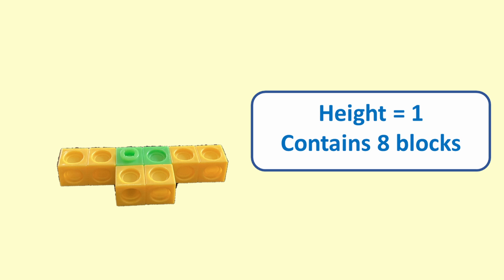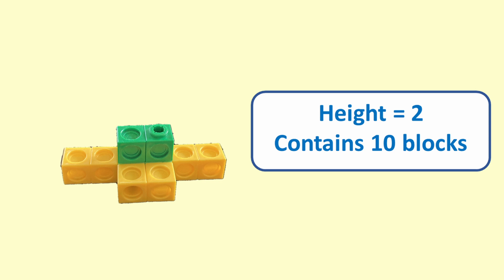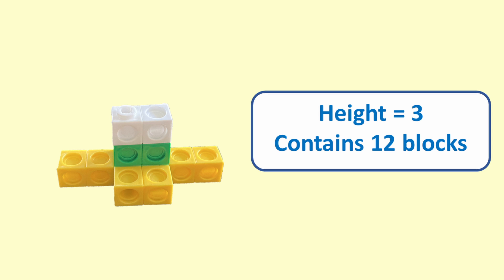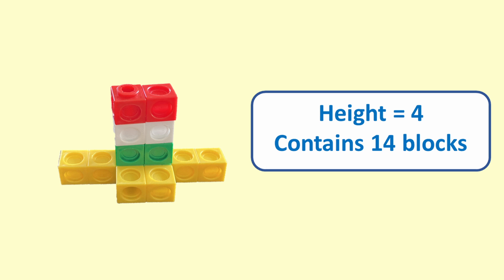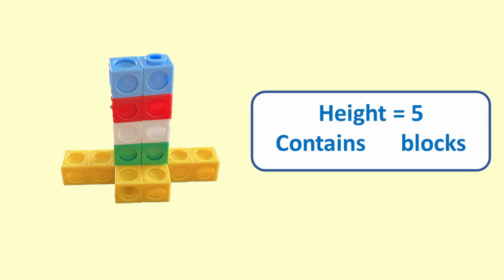We are building a tower out of Snaplink blocks. We start with a base of 8 blocks and each layer after that takes 2 more blocks. If our tower has a height of 2 blocks then it will contain 10 blocks. If a height of 3 blocks, it will contain 12 blocks. If a height of 4 blocks, it will contain 14 blocks. So how many blocks will a tower of height 5 contain? I hope you said 16.